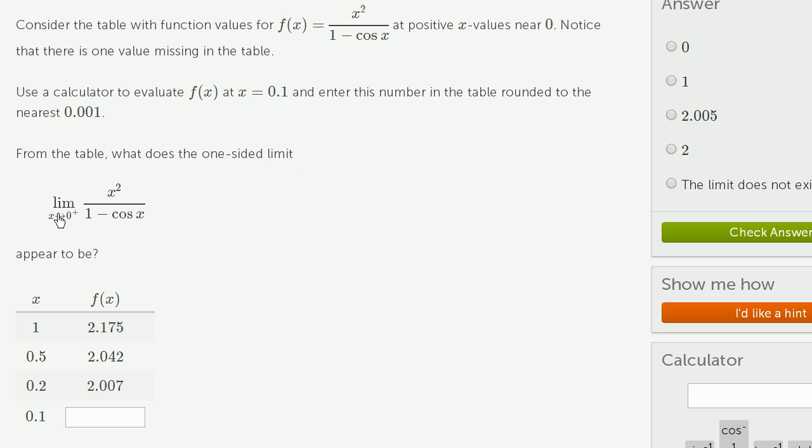...the limit as x approaches 0 from the positive direction, as x squared over 1 minus cosine of x appear to be? So let's see what they did. They evaluated when x equals 1, f(x) is 2.175.